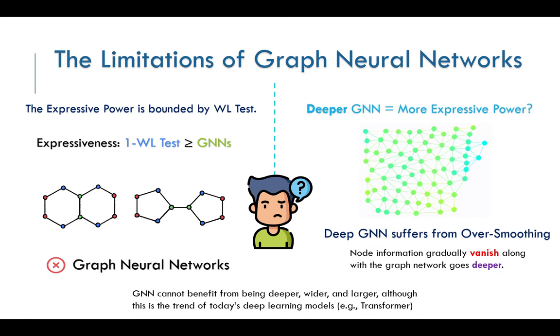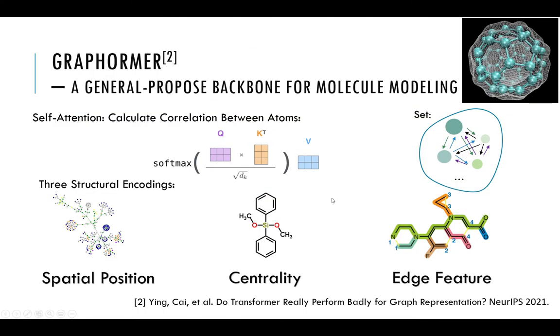Also, a deeper GNN does not equal to more expressive power. Deep GNN suffers from the over-smoothing, which means that it cannot benefit from being deeper, wider, and larger, although this is the trend of today's deep learning models, like a transformer. Therefore, in this competition, we choose to use Graphormer model, which is a general-purpose backbone for molecular modeling, and published by our team on NeurIPS 2021.